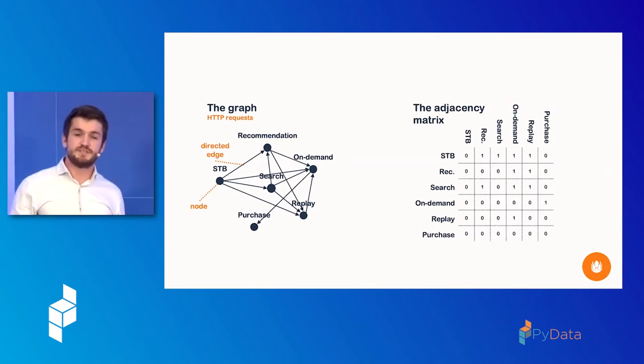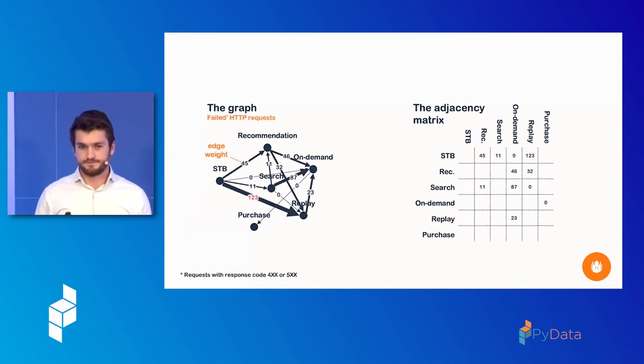Now, you may have heard of adjacency matrices, and on the right here, we see how on the vertical axis, what the origin of the request is, on the horizontal axis, what the destination is. A one means it's connected. What if we make it a little bit more interesting? We can add weights to these edges. Maybe we're interested in the amount of failed requests between services. We can also see how the adjacency matrix updates in that case.